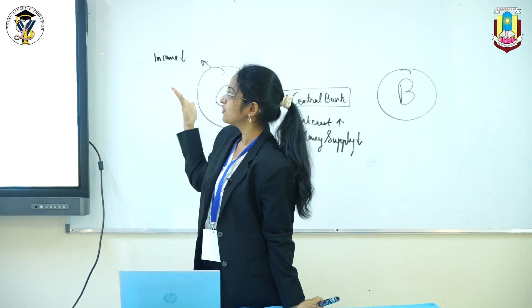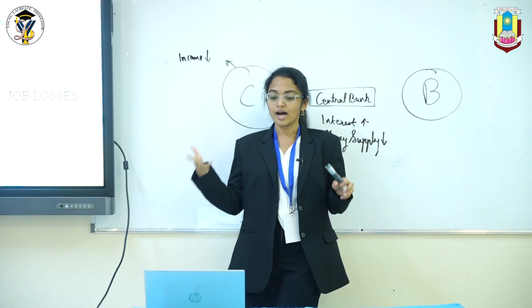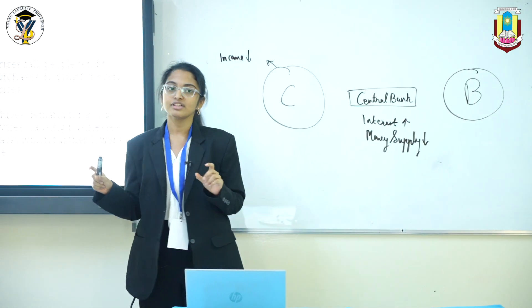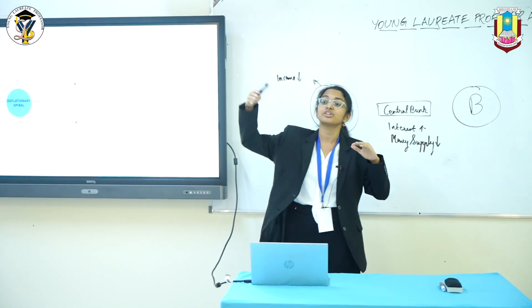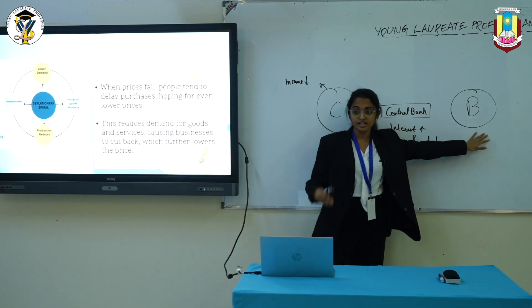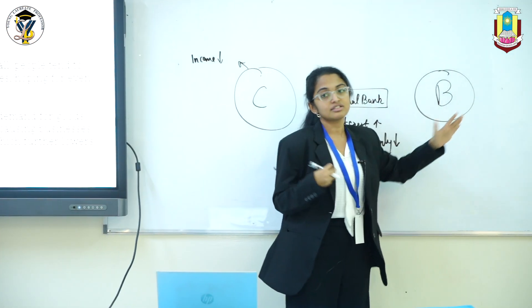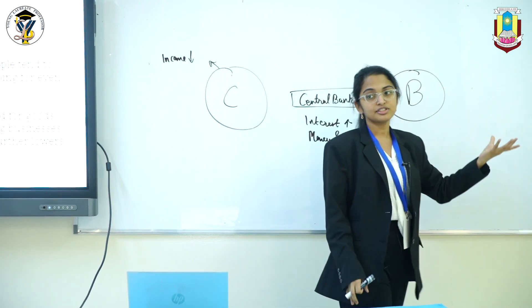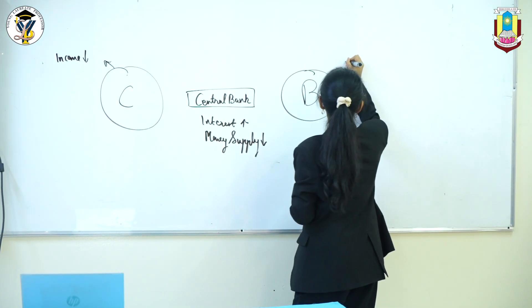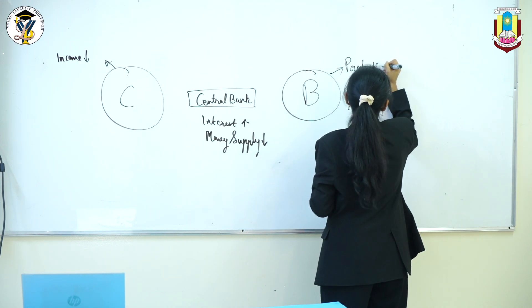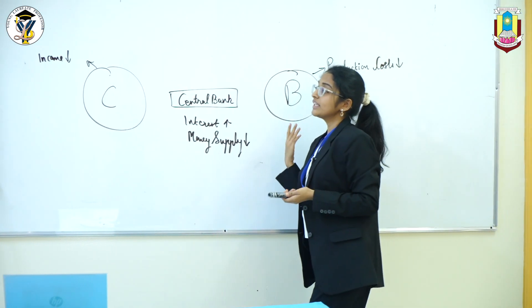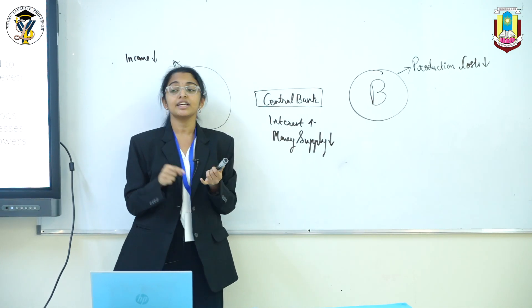Now since we have understood how deflation happens, let's understand what happens during deflation. When prices fall, even if people can buy, they expect that prices will continue to fall. So prices keep falling and businesses are not getting enough customers. Businesses start to struggle to make profits, and in order to overcome the situation, they cut down on their expenses — that is, their production costs. Slowly they cut down the wages of their employees.